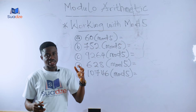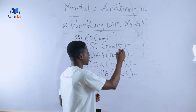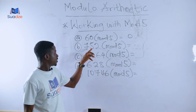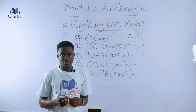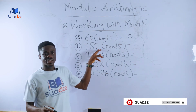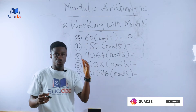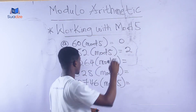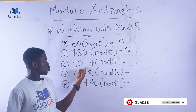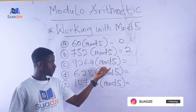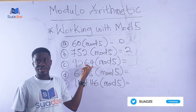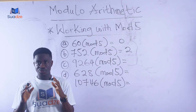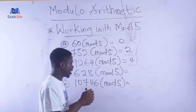Since the last digit falls between zero and four, the answer is the last digit itself — which is zero. The second example is 752 modulo 5. The last digit is two, which also falls between zero and four, so the answer is two. The third example is 9264 modulo 5. The last digit is four, which falls between zero and four, so the answer is four.